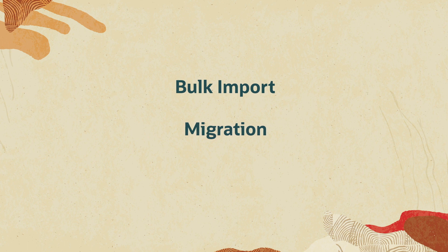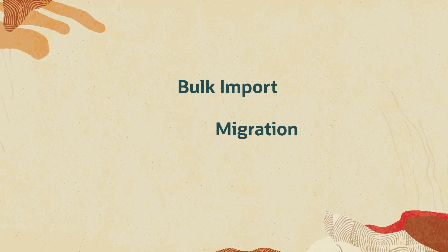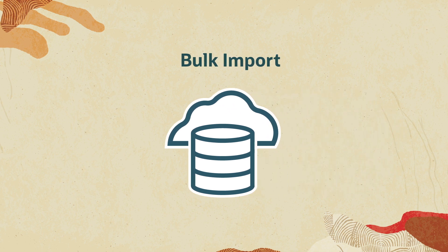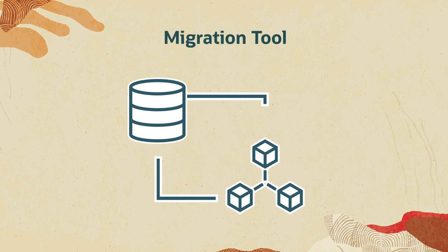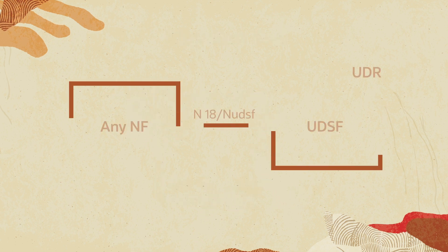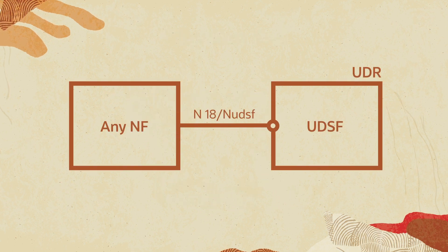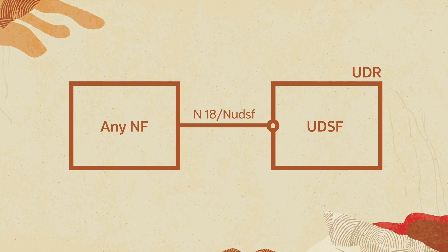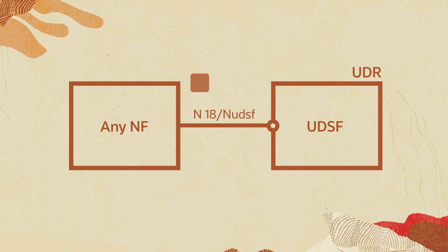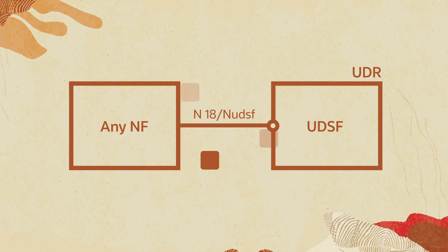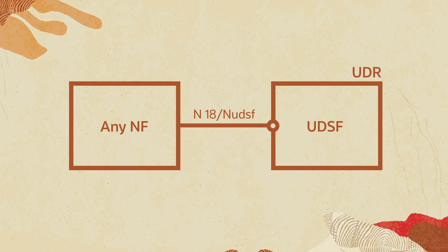UDR supports tools like Bulk Import Tool and Migration Tool. You can use Bulk Import Tool for bulk subscriber data provisioning, and Migration Tool for real-time subscriber migration in a live network. UDR supports unstructured data storage function, UDSF, NF functionality, which allows other 5G NFs to store and retrieve unstructured data. Its specifications are not defined by 3GPP, and it's part of Oracle's 5G UDR solution.